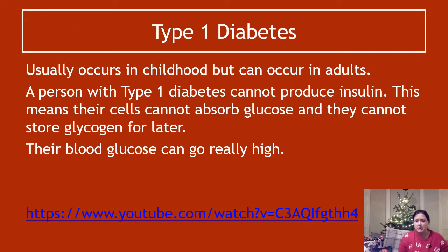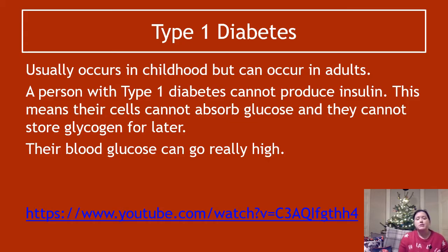Type one diabetes — these are features you need to know. It usually occurs in childhood, but it can occur in adults later on. A person with type one diabetes can't produce insulin, so they don't produce any of it from pancreatic cells. The reason why we'll learn in unit three — it's an autoimmune condition. The body's own immune system has killed the cells that produce insulin inside the pancreas.